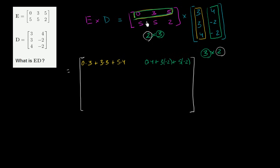The bottom left entry is going to be this row, the second row here, times the first column here. So it's 5 times 3 plus 5 times 3 plus 2 times 4. And we're almost done. We just need to multiply or take the dot product of this row with this column right over here. So it's going to be 5 times 4 plus 5 times -2 plus 2 times -2.